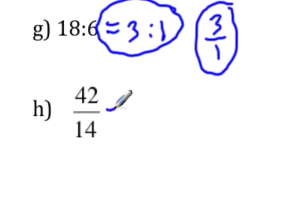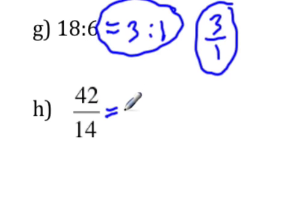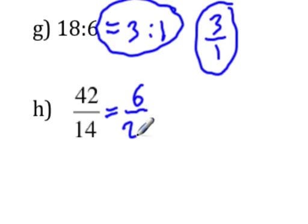Now, anybody who's ever played football should know that 42 is divisible by 7 — it's 6 converted touchdowns. So 42 divided by 7 is equal to 6, and 14 divided by 7 is 2.